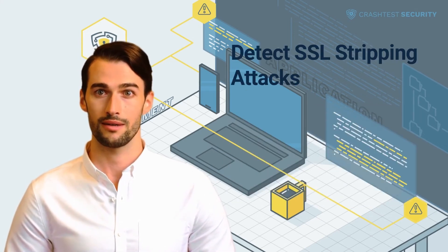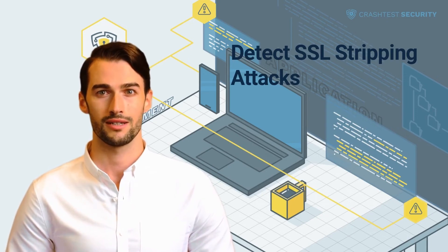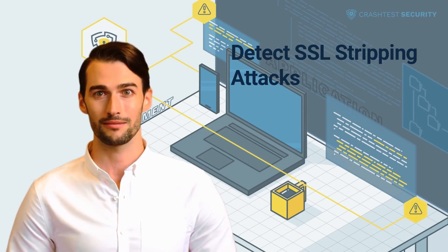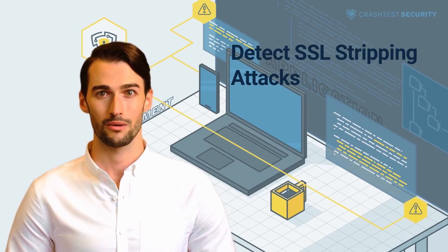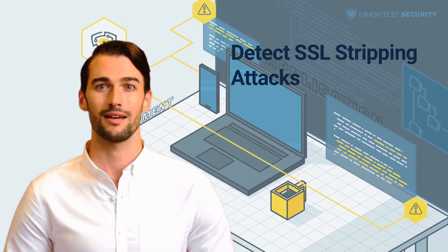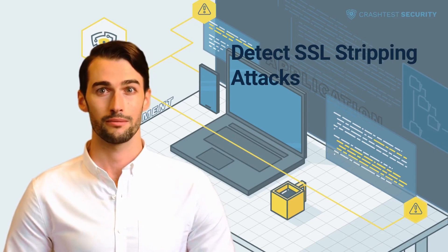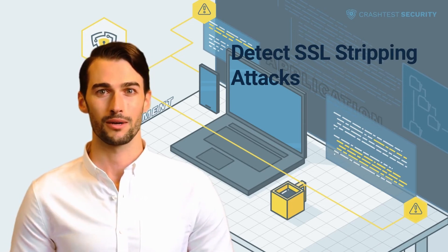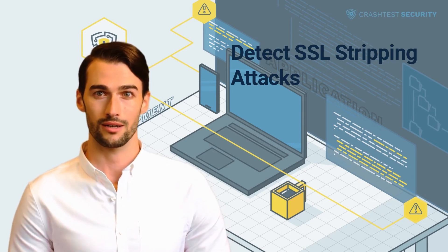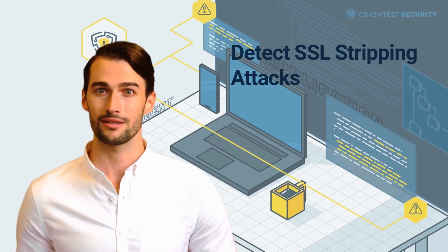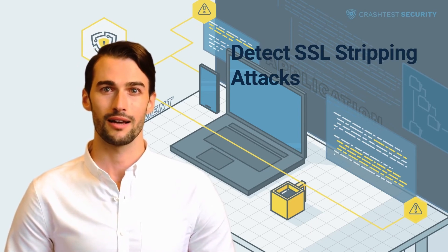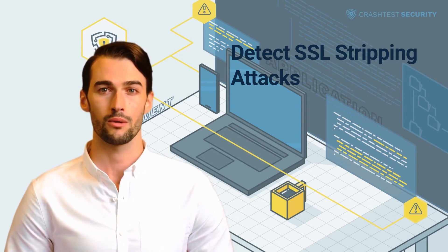Even though many SSL stripping attacks go unnoticed, they are not that difficult to detect. One has to be aware of the signs that indicate such a vulnerability. The web address in the browser's search bar is the most obvious way to detect an SSL stripping attack — instead of HTTPS, it would say only HTTP. In addition, the padlock next to the web address bar would be open and colored in red. Another obvious way is by keeping an eye on the design and appearance of websites, as fake websites offered after an SSL strip attack are often slightly different from the original.